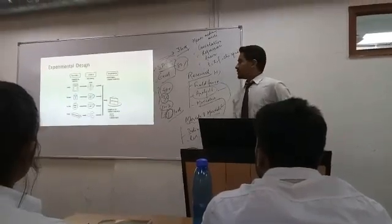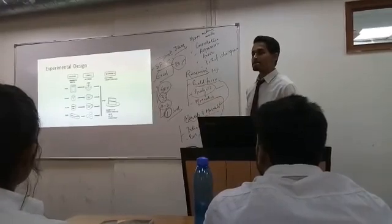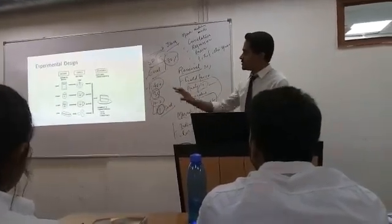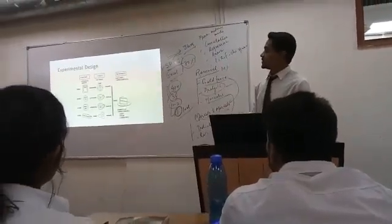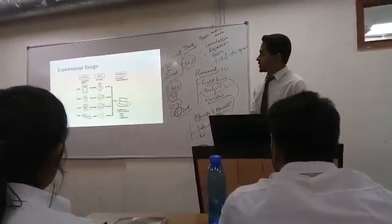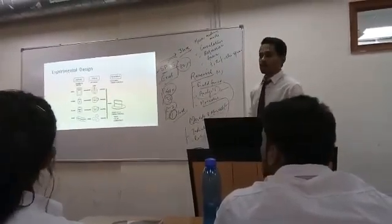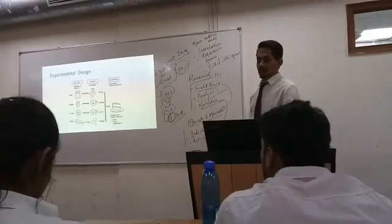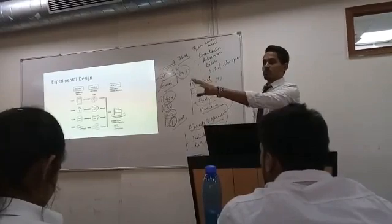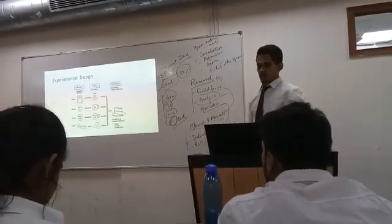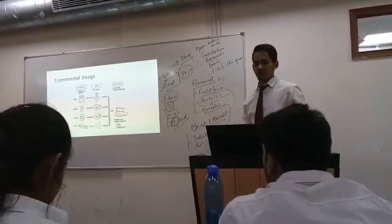For experimental design, looking at this picture, we have various factors — oven, sugar, flour, and eggs — with different levels: at what temperature do you set the oven, how much sugar, how much flour, and how many eggs to make a cake. Based on different combinations, we will get different taste, color, and consistency. If we ask a group of questions, we will have different responses, outcomes, and characteristics.